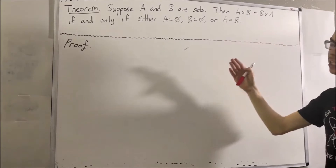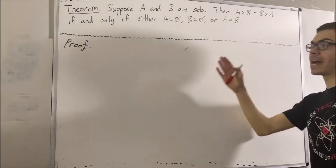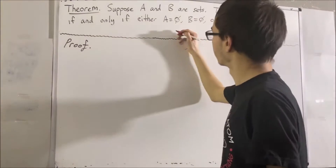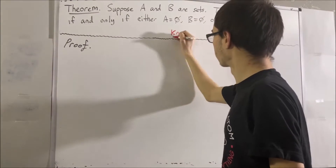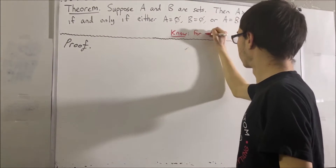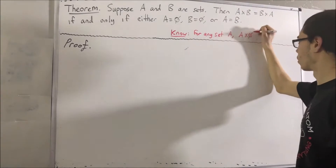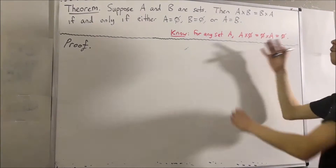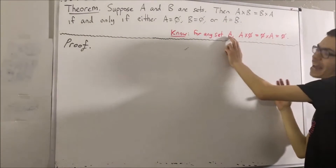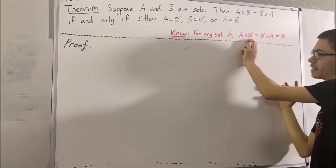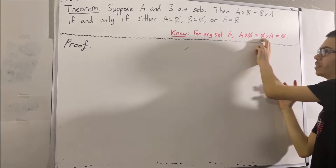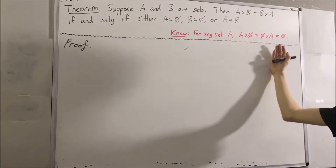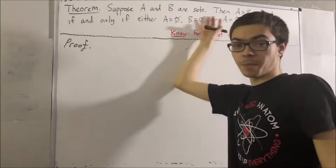Now, it turns out a useful fact in proving this theorem is the following: for any set A, A times the empty set is equal to the empty set times A. This is going to be useful in proving this theorem.